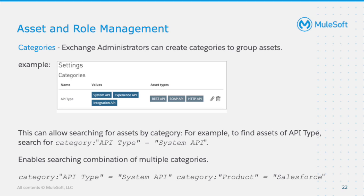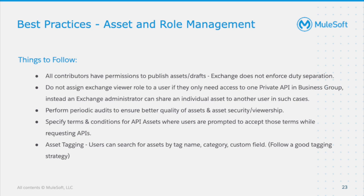Categories are like an island grocery store — they make search easy by categorizing assets. For example, you can create an API type category as 'System API,' or use a combination such as API type 'System API' and product 'Salesforce.' From a best practices perspective, there are only three types of users, and the issue is there is no proper distribution of duties. An Exchange Contributor can touch any asset and create assets without regulation, so any company must keep that in mind when assigning the Exchange Contributor role.